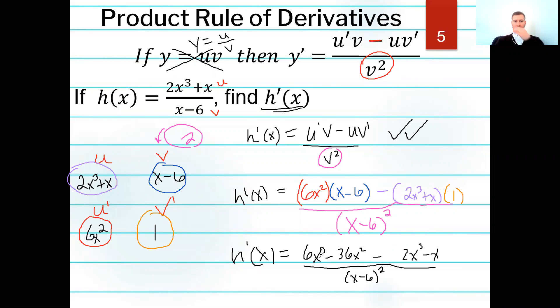And then I could end up combining some like terms. I got a 6x to the third up top and a minus 2x to the third. So let's just see what that would give me. 6 minus 2 is 4x to the third minus 36x squared minus x all over x minus 6 squared. And then I could factor out an x, which is equal to x on top, all over x minus 6 squared times 4x squared minus 36x minus 1. And this can not be factored because 4 times 1 is 4. And there are no factors of 4 that would add or subtract to 36. So this really would be my final answer right here.